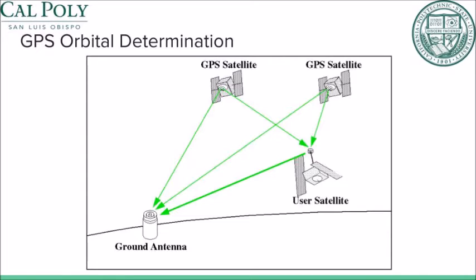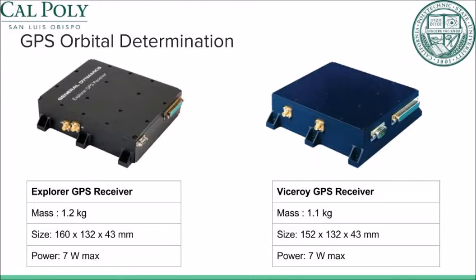GPS orbit determination allows for position to be found within 10 meters. The idea of GPS orbit determination is enticing for small satellites so that they need not rely on the government to provide accurate positional data. However, GPS receivers are currently too large for nanosatellite flight. Pictured here are two GPS receivers that are flown on LEO satellites. As seen by the dimensions, these receivers are slightly too large, too massive, and have too high power consumption for a small satellite to carry in addition to its payload.